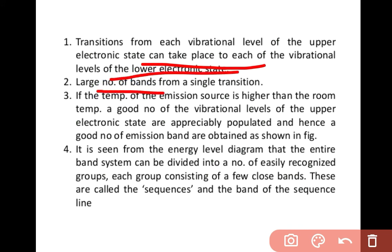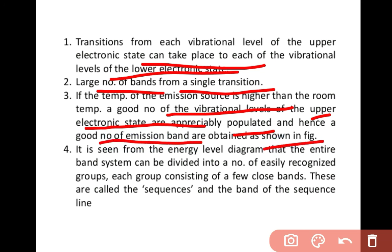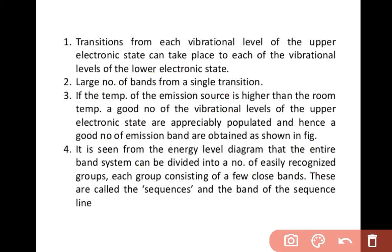Second: a large number of bands arise from a single transition. If the temperature of the emission source is higher than room temperature, a good number of vibrational levels of the upper electronic state are appreciably populated, and hence a good number of emission bands are obtained. It is seen from the energy level diagram that the entire band system can be divided into a number of easily recognized groups, each group consisting of a few closely spaced bands — these are called sequences.